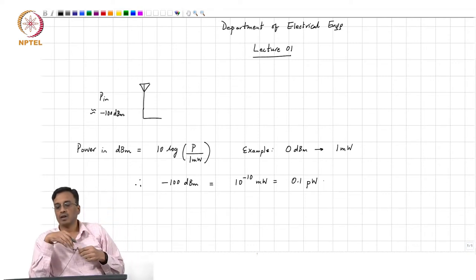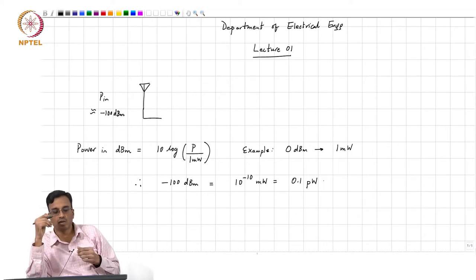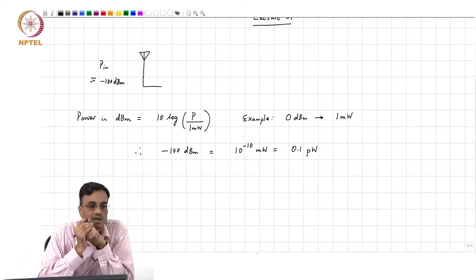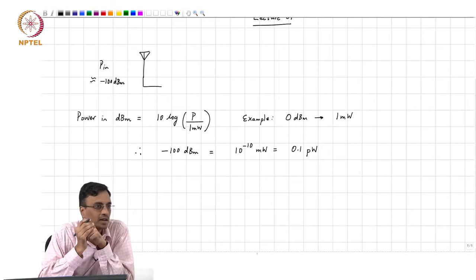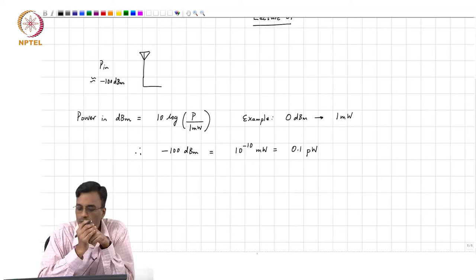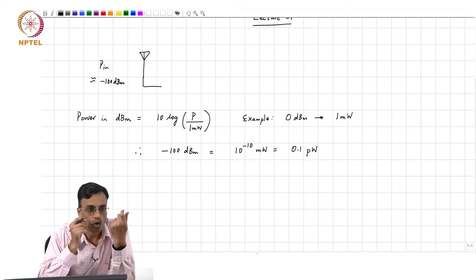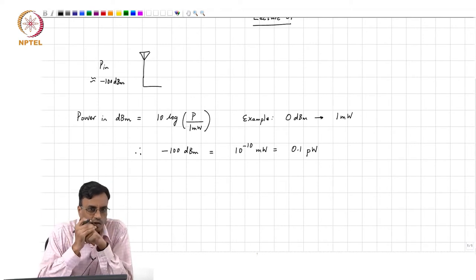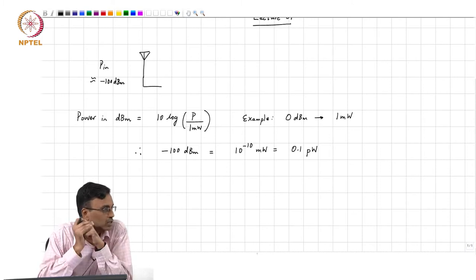To make matters worse, you are not the only one using a phone — you and your neighbor and everybody else is also using the phone, most of the time simultaneously. So it is not merely enough to detect a very very small signal; it is also important to detect this very small signal in the presence of other signals which can be potentially very very large.